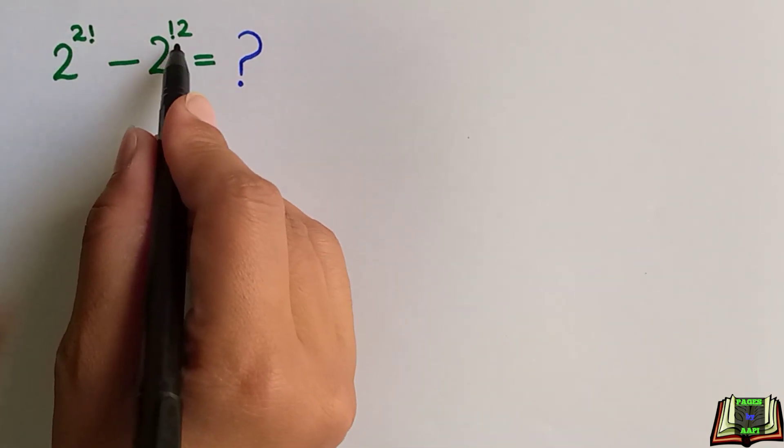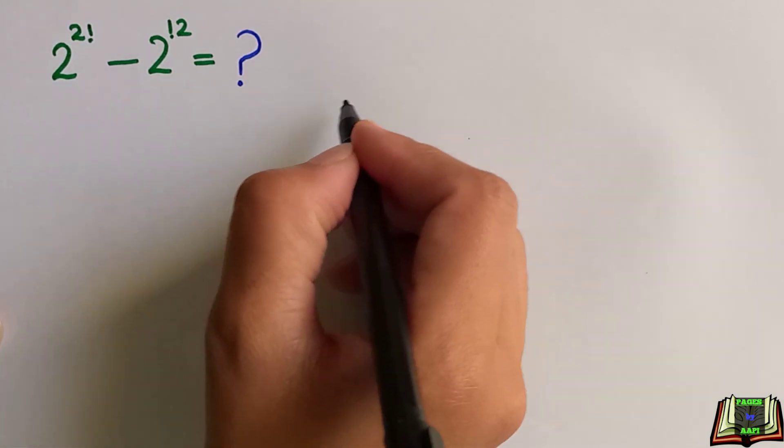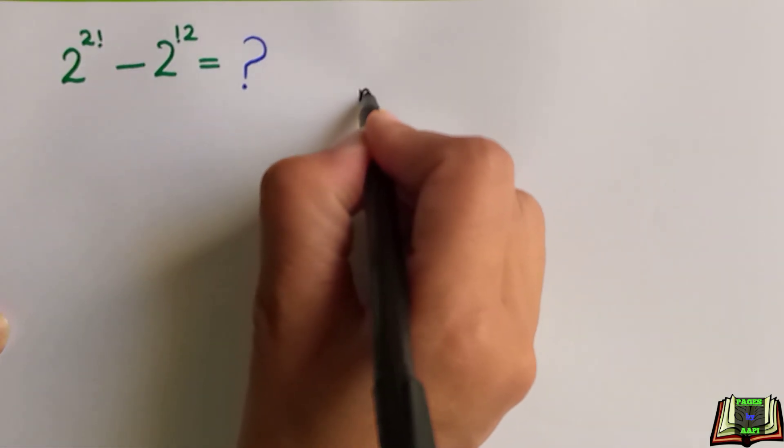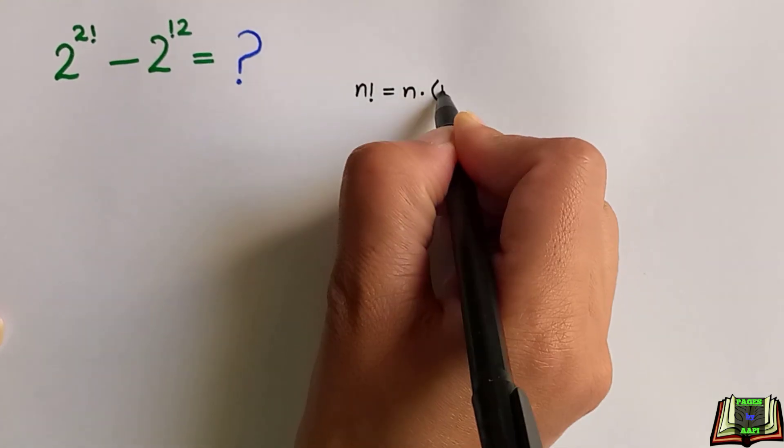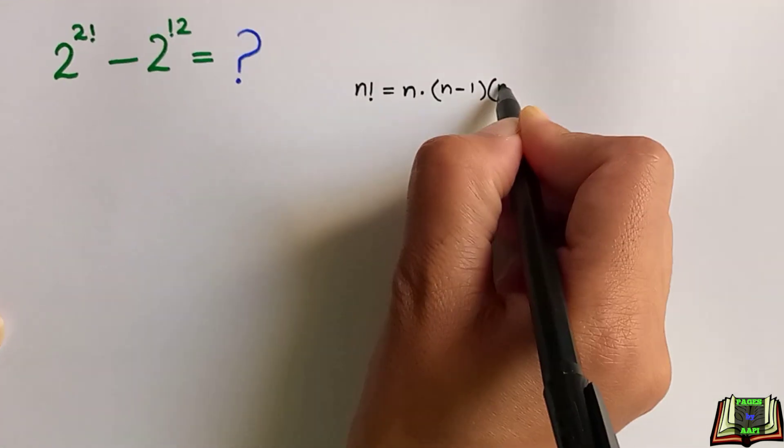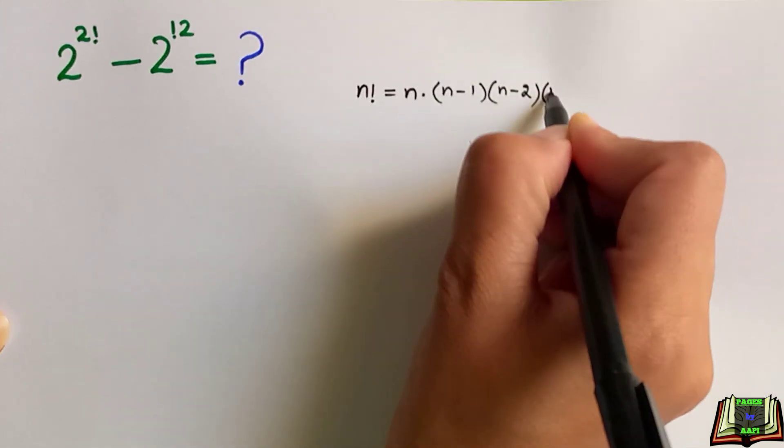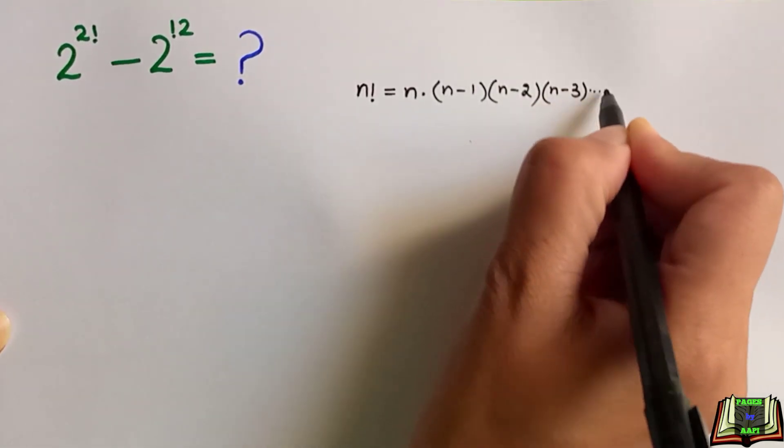First of all, we will solve the exponents. To find 2 factorial, we know the formula: n factorial equals n times (n-1) times (n-2) times (n-3) and so on till 1.